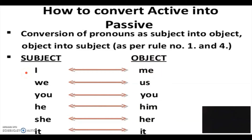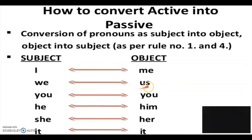Let's understand the conversion of these pronouns. In active voice, if 'I' is the subject, it becomes 'me' in passive voice — so 'I' is the subject pronoun and 'me' is the object pronoun. Similarly, 'we' becomes 'us' in passive voice. For 'you,' it remains 'you' in both active and passive voice.